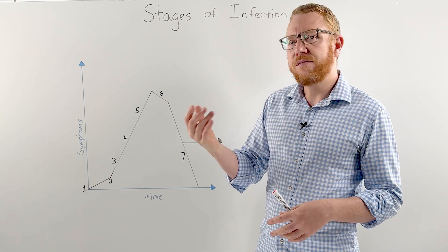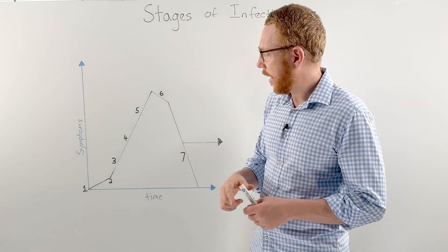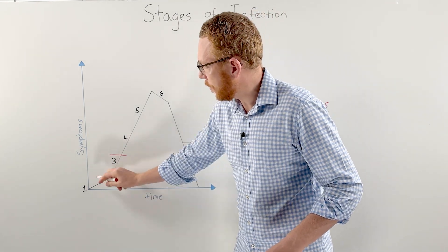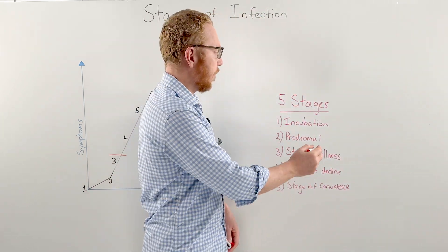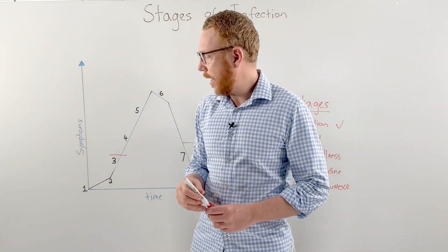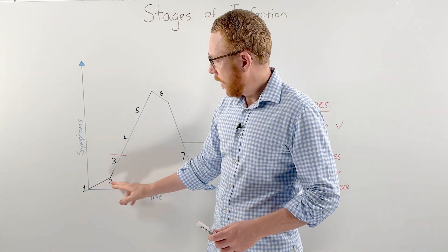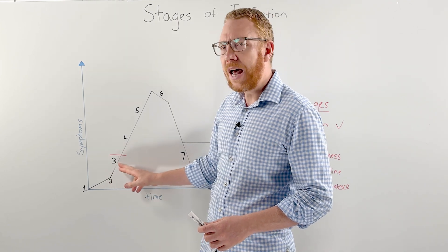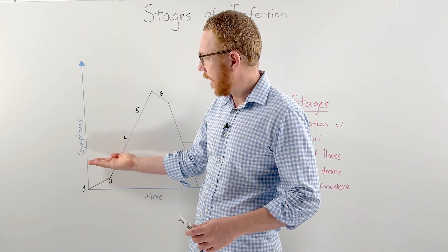So the microorganism, whether it's a virus, a bacteria, a fungi, it needs to start to replicate. So these first three steps, one, two, three, correspond to incubation. Incubation is getting into the body, evading the immune system, and starting to replicate. So the numbers are starting to come up here.